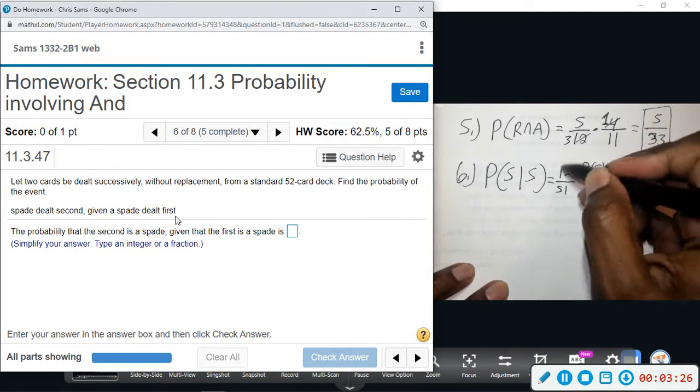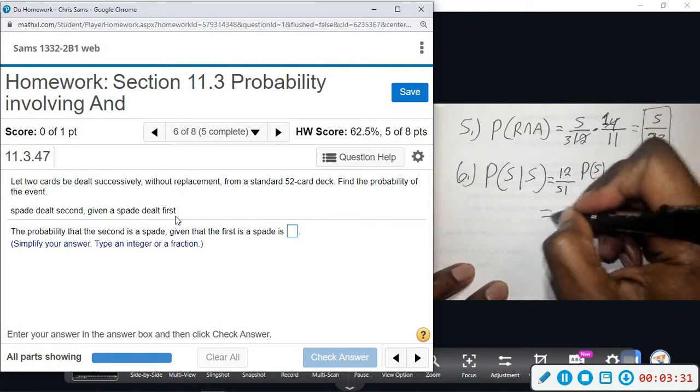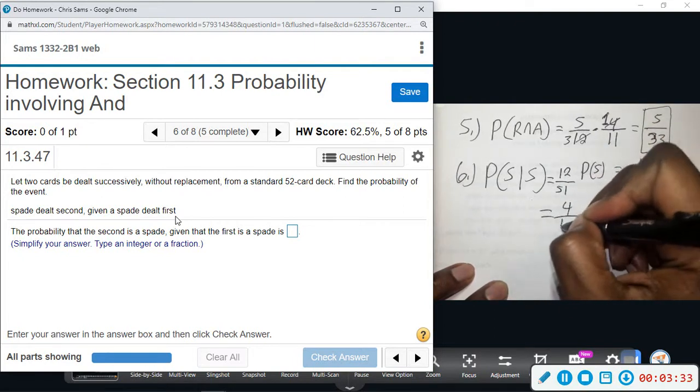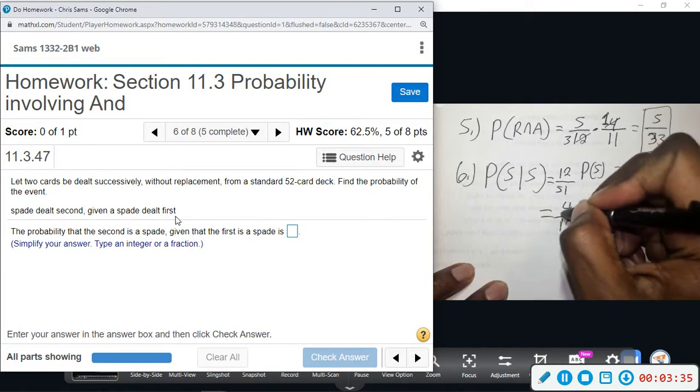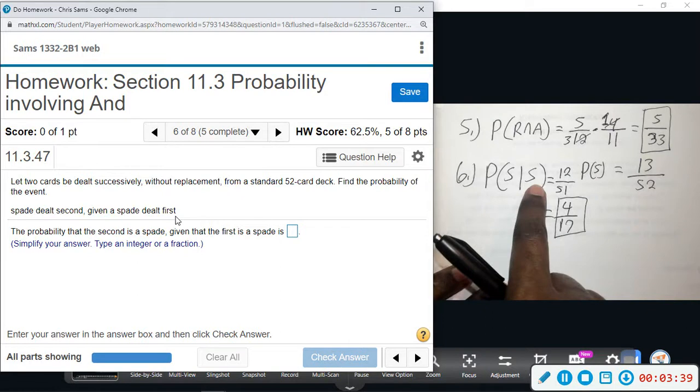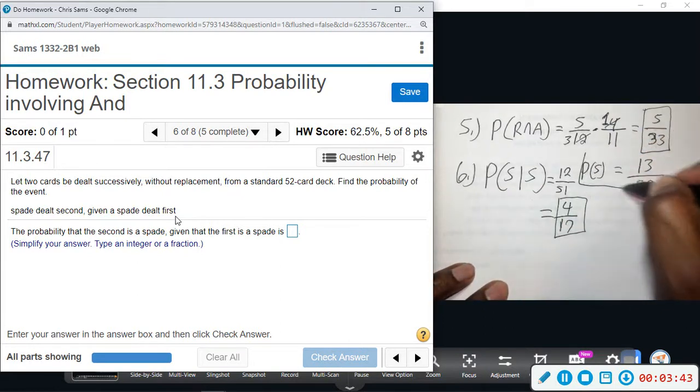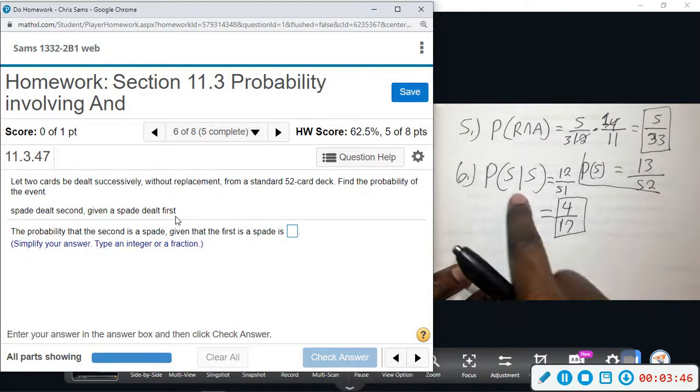So this is the probability, but we can reduce this dividing both by three, and that will give us four out of 17. So the probability that the second card is a spade given that the first one was a spade is four out of 17. So you first find that probability, take one away to get the conditional.